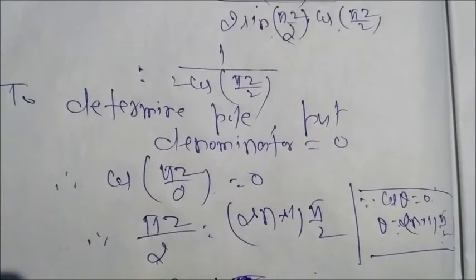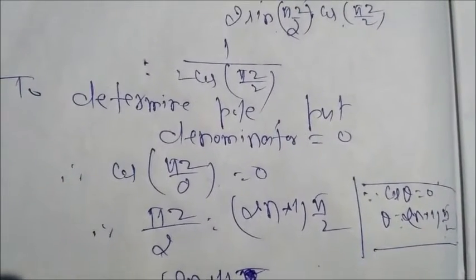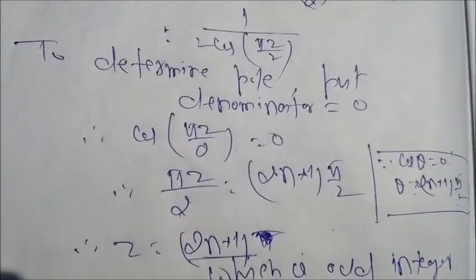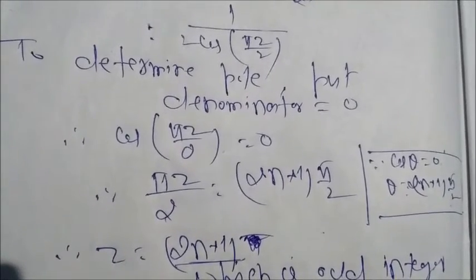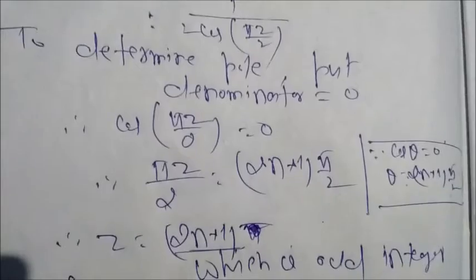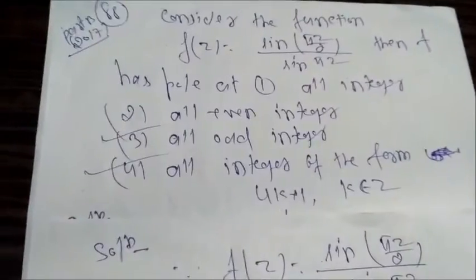Here π/2 from both sides will be cancelled out, so it remains z equals 2n+1, which is an odd integer. So if we see from the options, then option 3 is correct.